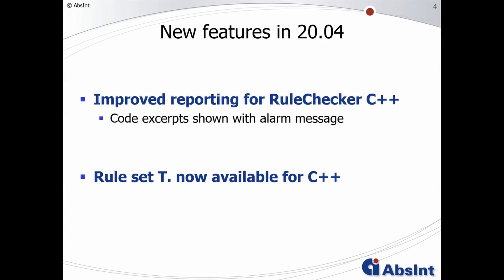The second new feature for the C++ rule checker is Rule Set T. With this rule set you can now also check for metric thresholds in your C++ code. If you already know this from the C rule checker, then you already know how to use it.